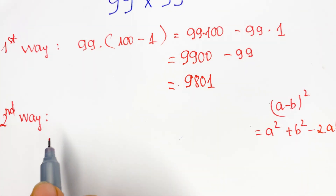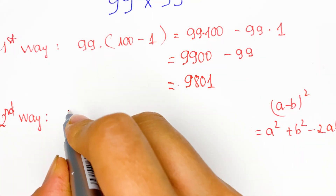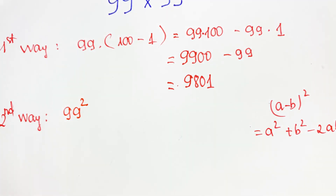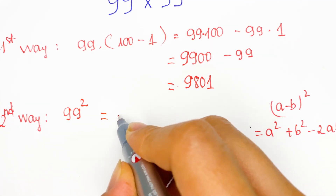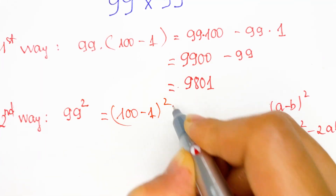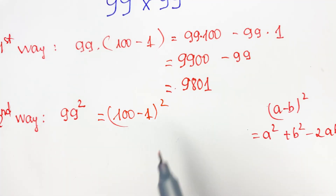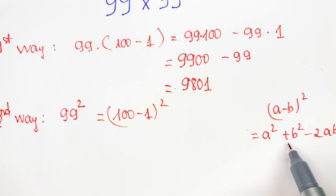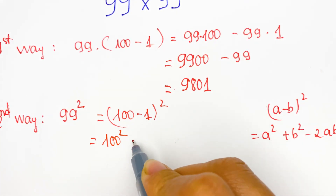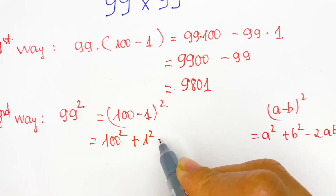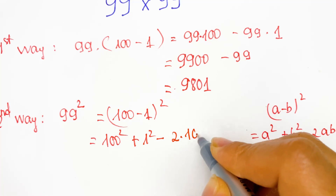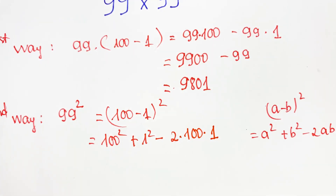And then you can rewrite that. 99 times 99 is equal to 99 squared, and then it is equal to 100 minus 1, in brackets, squared. We can apply the formula here, so we have 100 squared plus 1 squared minus 2 times 100 times 1.